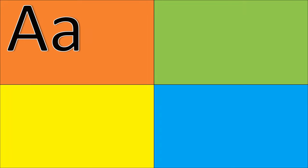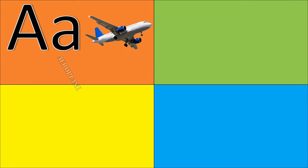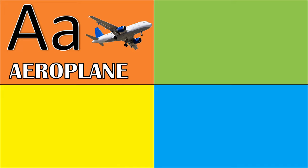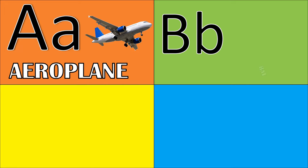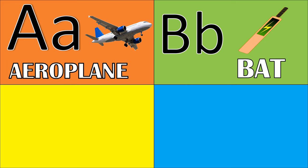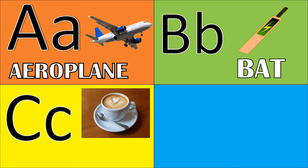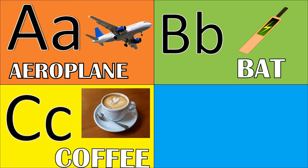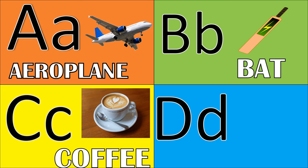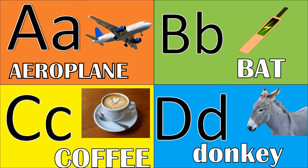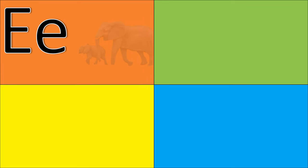A for aeroplane, B for bed, C for coffee, D for donkey, E for elephant.